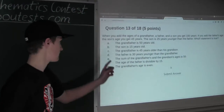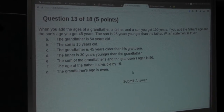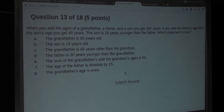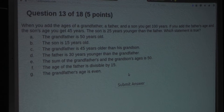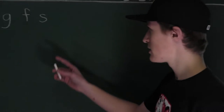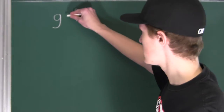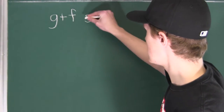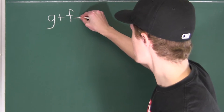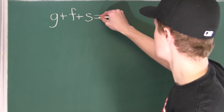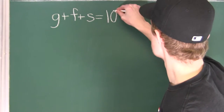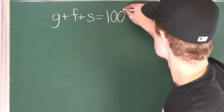Let's look at the first statement: when you add the ages of a grandfather, a father, and a son, you get 100 years. As an equation, that would be G plus F plus S is equal to 100. That is the first equation.